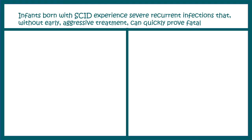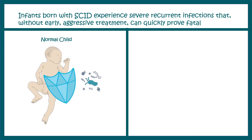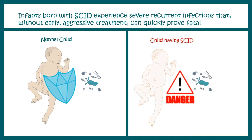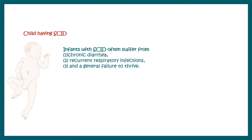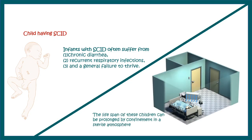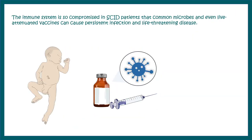Infants with SCID experience severe recurrent infections, and without early aggressive treatment it can prove fatal. Normal children are generally immune to several bacteria or viruses, but since the immune system is severely compromised in SCID, pathogens that are no threat to a healthy baby become harmful. A newborn infant with SCID can suffer from chronic diarrhea, recurrent respiratory infections, and problems thriving. They have to be kept in an isolated, germ-free environment. The situation is so compromised that even live attenuated vaccines might cause infections in these babies.